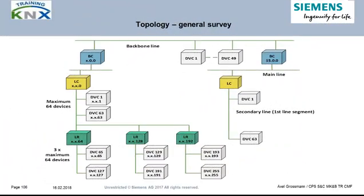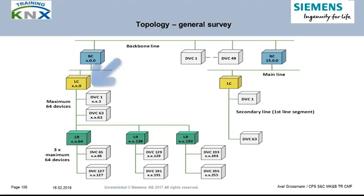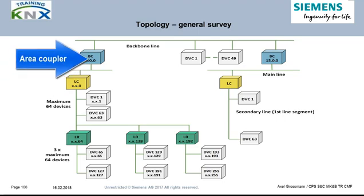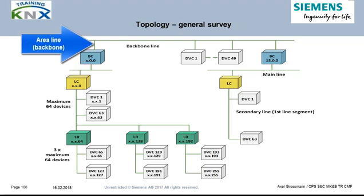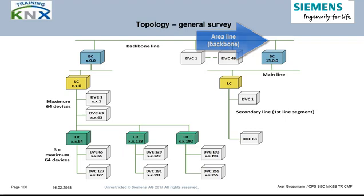This graphic shows a minimalistic general overview of the pure twisted pair structure, including all possible hierarchy levels. Without specific requirements, you always start with line 1.1 in ETS and assign the bus devices to the first segment of this line. In each line, a line coupler can be inserted — here yellow marked — to link up this line via the next higher level to other equally designed lines. Also this level, the main line, has couplers to the next level above.